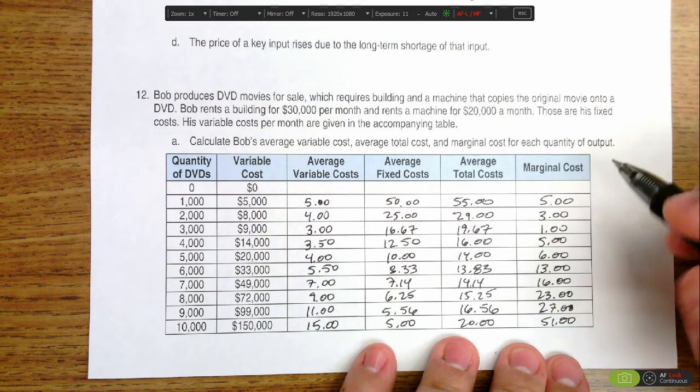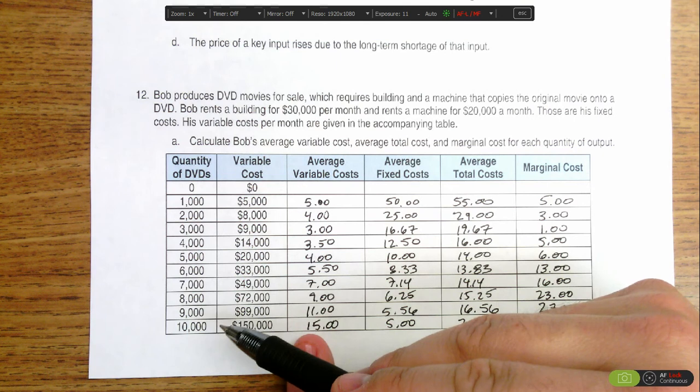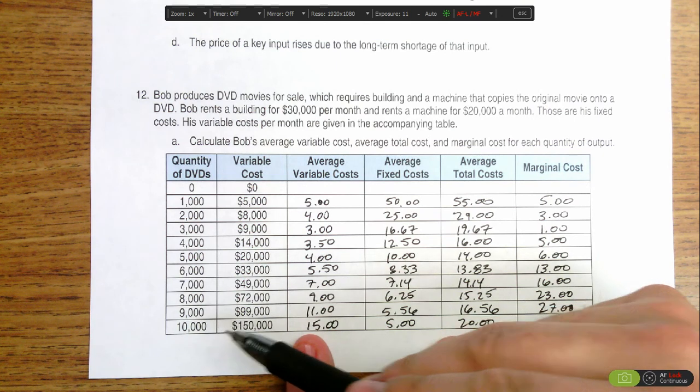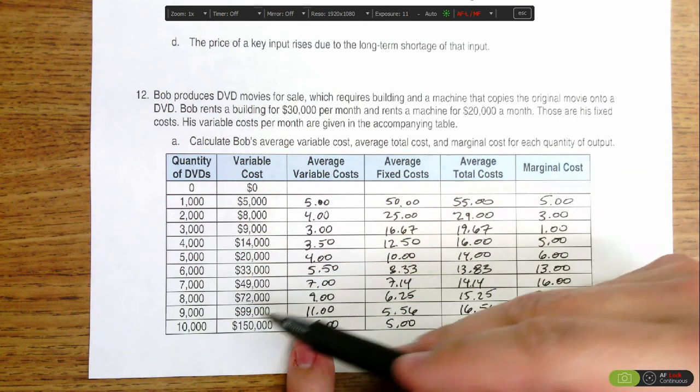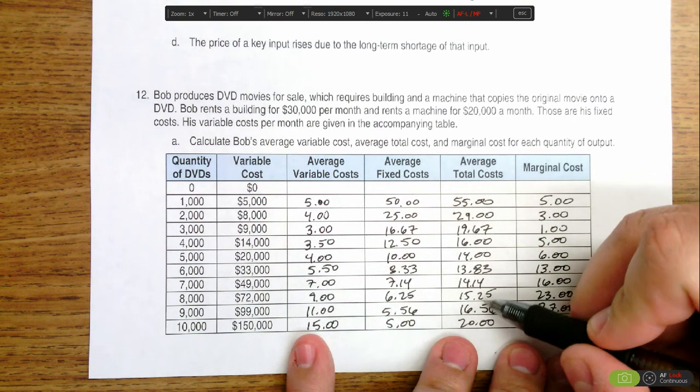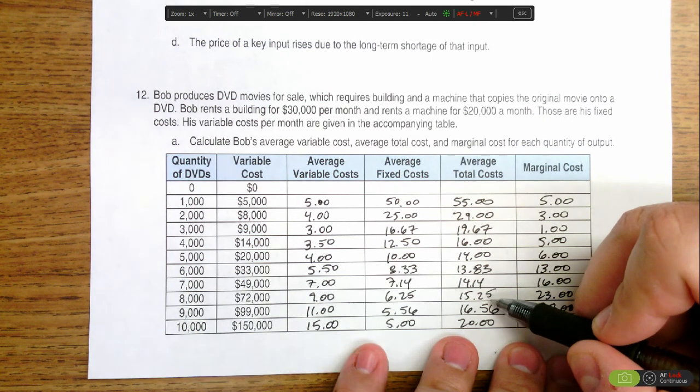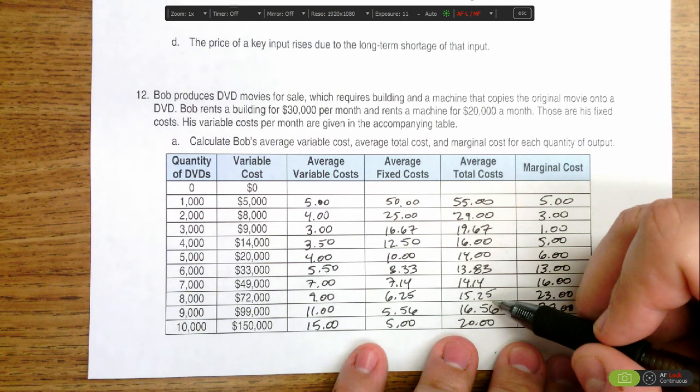The total revenue then is 8,000 times $25 per DVD. The total cost is 8,000 times $15.25 per DVD. And when we do that math we find that the total profit is $78,000 for Bob.